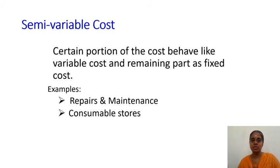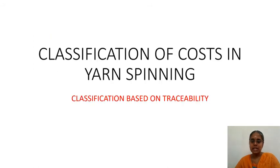Stores cost and repair and maintenance cost are classified as semi-variable costs, because they are partially fixed and partially variable — repair costs increase slightly with higher production, but some maintenance costs occur even without production.